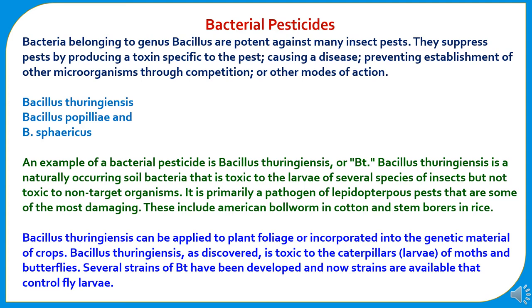Bacteria belonging to the genus Bacillus are potent against many insect pests. They suppress pests by producing a toxin subspecific to the pest, causing disease, preventing establishment of other microorganisms through competition, or other modes of action. Different bacterial strains used include Bacillus thuringiensis, Bacillus popilliae, and Bacillus sphaericus. An example of a bacterial pesticide is Bacillus thuringiensis, also known as Bt.